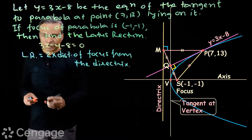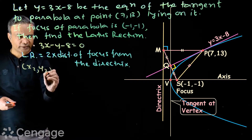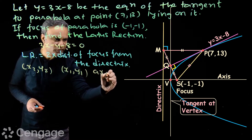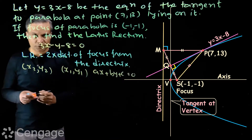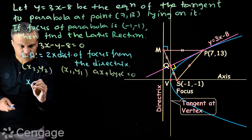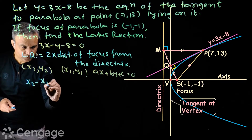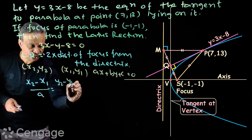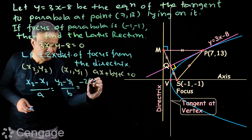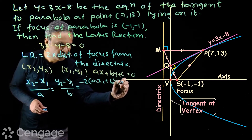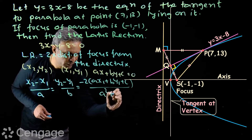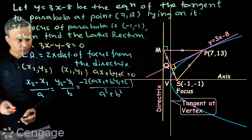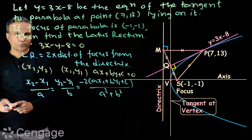We have the formula: if (x₂, y₂) is the reflection of point (x₁, y₁) in the line ax + by + c = 0, then (x₂ - x₁)/a = (y₂ - y₁)/b = -2(ax₁ + by₁ + c)/(a² + b²). Using this equation we get the coordinates of point M.